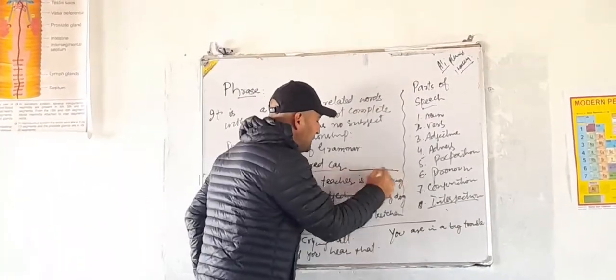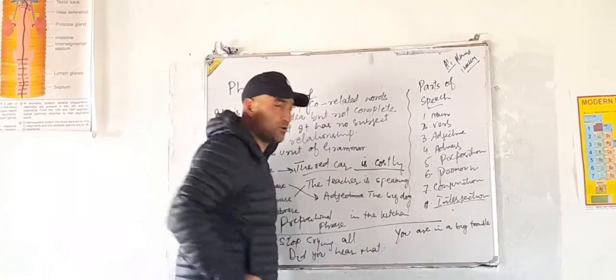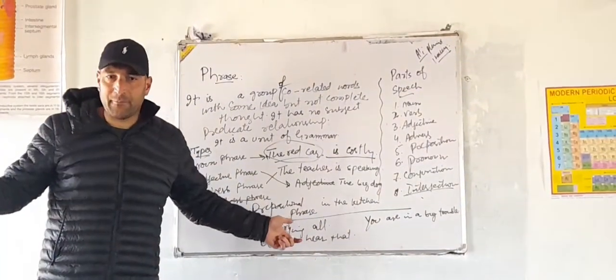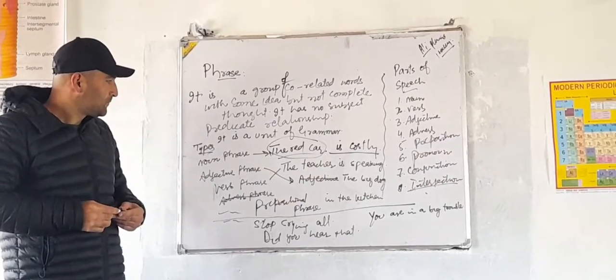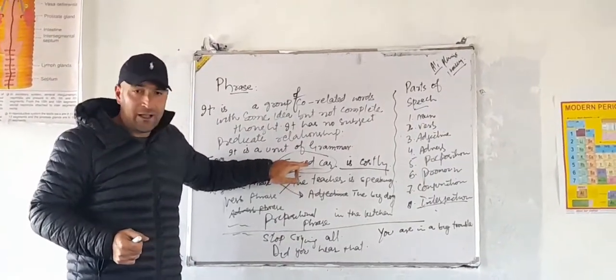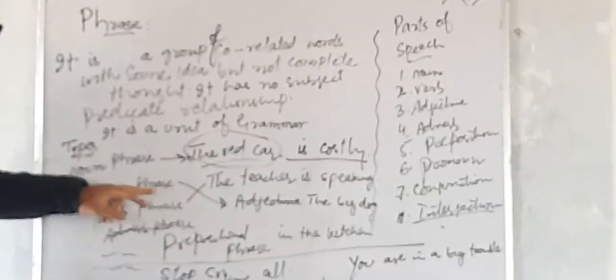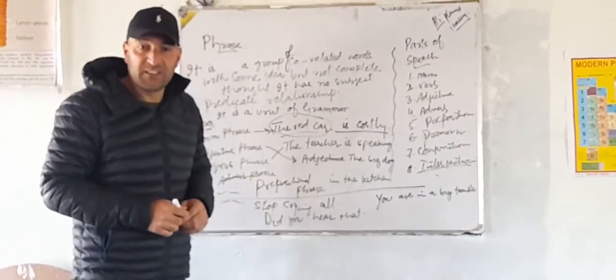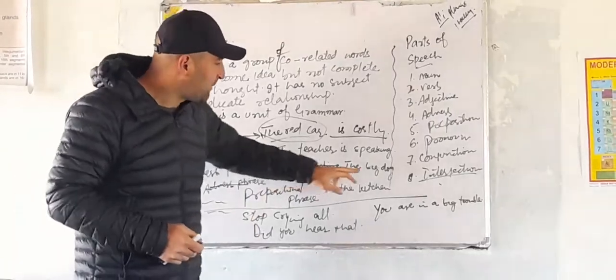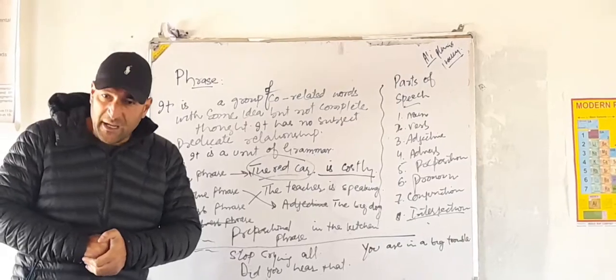The word bank is costly. The word bank is costly. Noun phrase. Now adjective phrase. He ate crispy tasty chocolate, which means adjective phrase. Crispy tasty chocolate. The big dog looks furious, which means adjective phrase. The big dog.